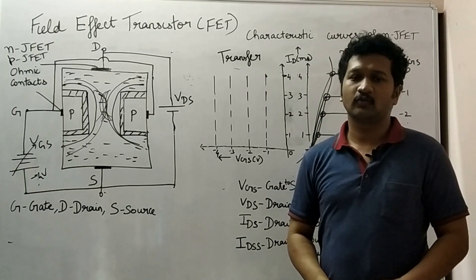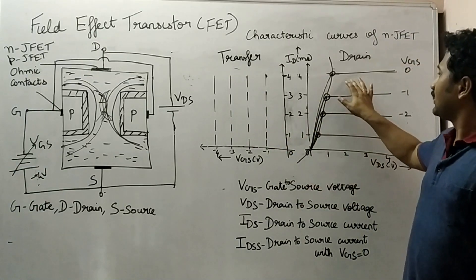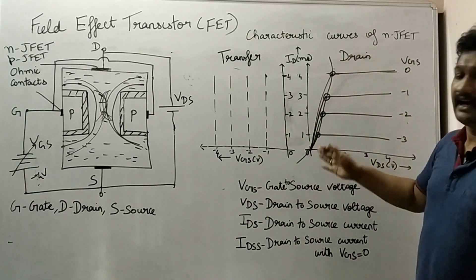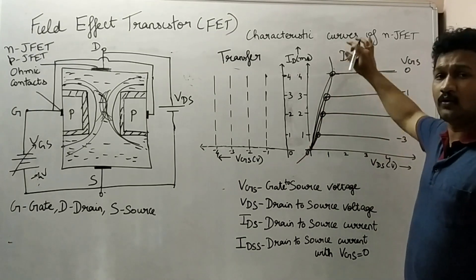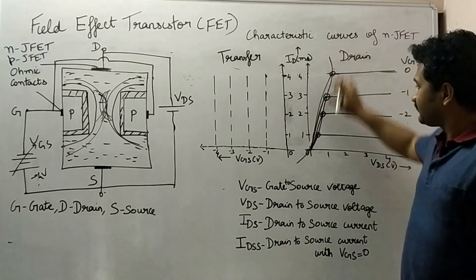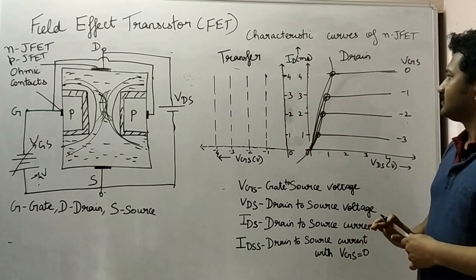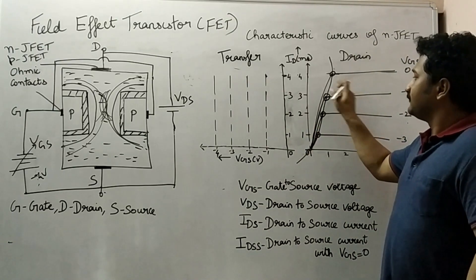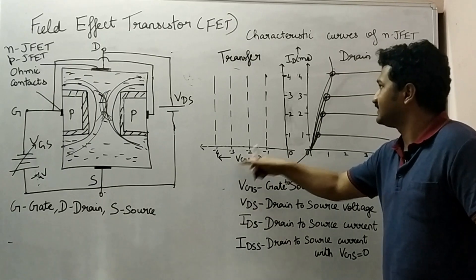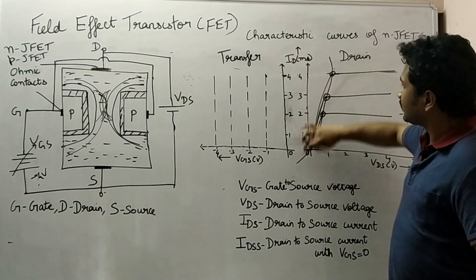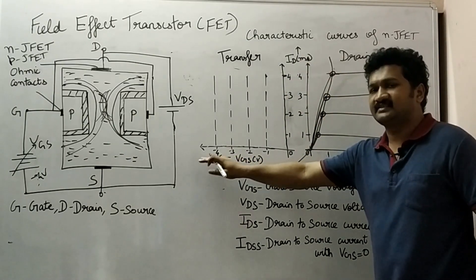In this lecture we are going to discuss about the transfer characteristics of N-channel JFET. In the previous videos we saw how the drain characteristics curve and the locus path were obtained. Now with the help of the drain characteristics plot, we will derive the transfer characteristics of N-channel JFET. To plot this, VGS is on the x-axis and drain current ID is on the y-axis — taking the common y-axis with ID in milliamps and VGS in the negative quadrant.